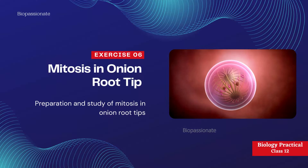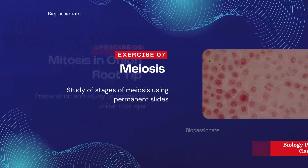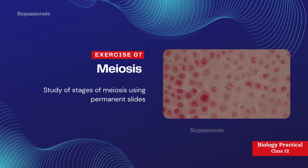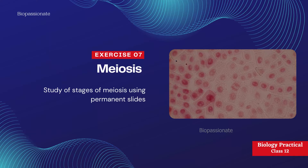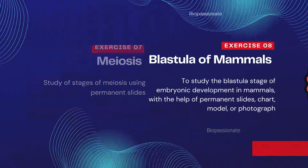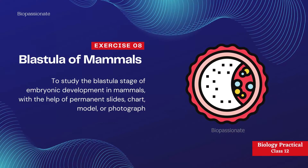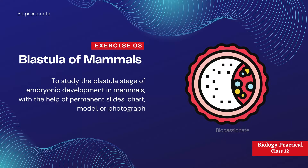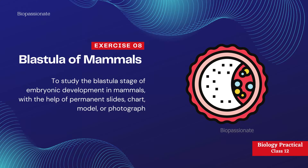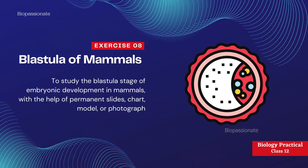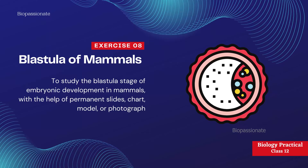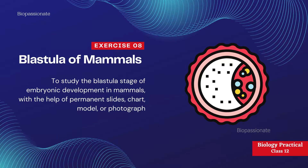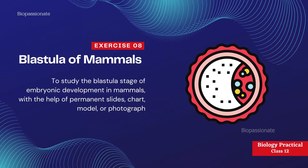Exercise number seven: meiosis — study of stages of meiosis using permanent slides. It's a demonstrative experiment and this question is compulsory. Exercise number eight: blastula of mammals — to study the blastula stage of embryonic development in mammals with the help of permanent slides, chart, model, or photograph. One question from this concept is compulsory; students need to identify the photograph, chart, model, or permanent slide.